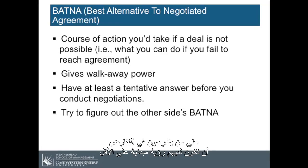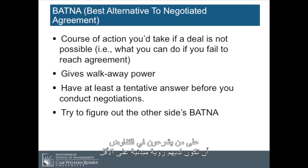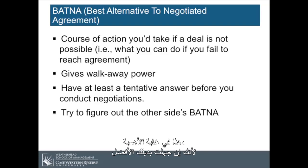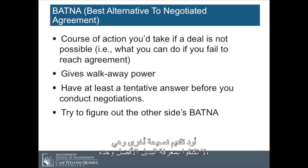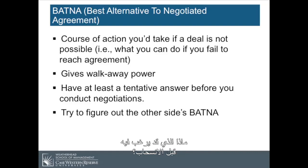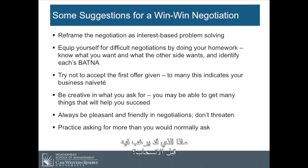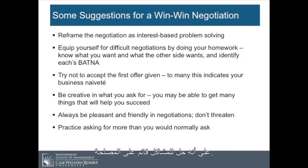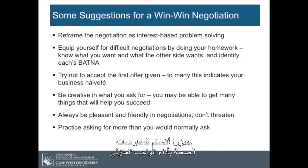Those entering a negotiation must have at least a tentative answer to what is your BATNA before you conduct negotiations. This is very essential because if you don't know what your BATNA is, you're not able to negotiate effectively for what you want. It's not just sufficient to know your BATNA — you should try to figure out the other side's BATNA: what did they have to have before they will walk away? Some suggestions for a win-win negotiation: reframe the negotiation as an interest-based problem-solving. Equip yourself for difficult negotiations by doing your homework. Know what you want and what the other side wants and identify each side's BATNA.